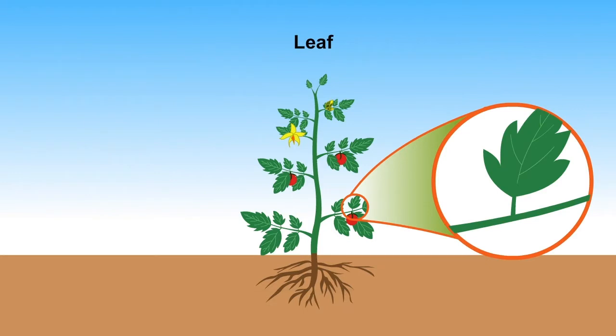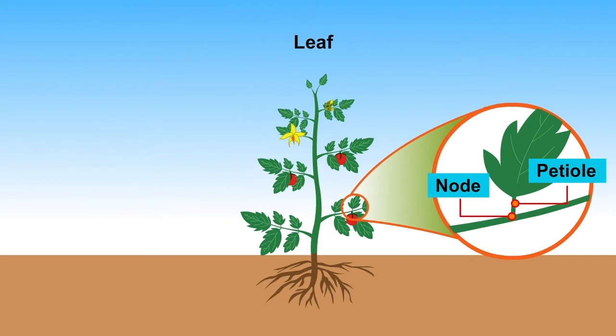Leaves grow on the stem and are attached to a node on the stem. Most of the leaves are green in color due to the presence of chlorophyll. The petiole is the stalk that attaches the leaf to the stem.